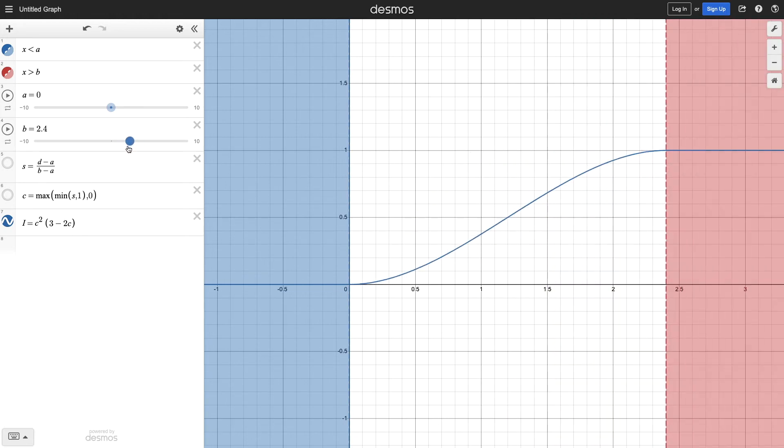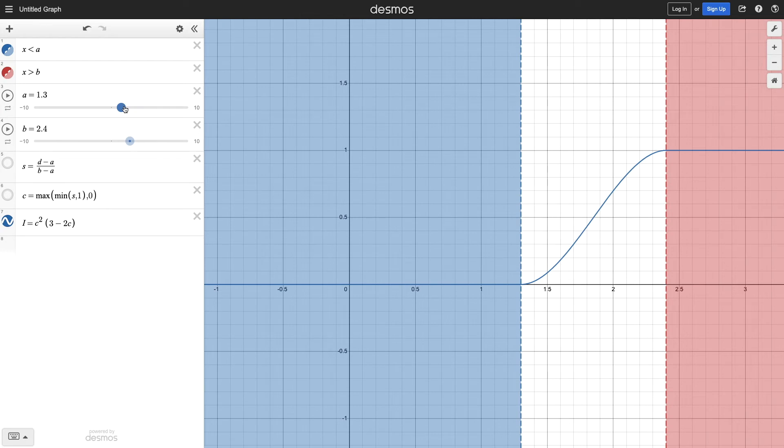If you've done any traditional computer animation before, you might recognize that this is just a tween. But this exact curve is the one that you'll see most often with point lights.